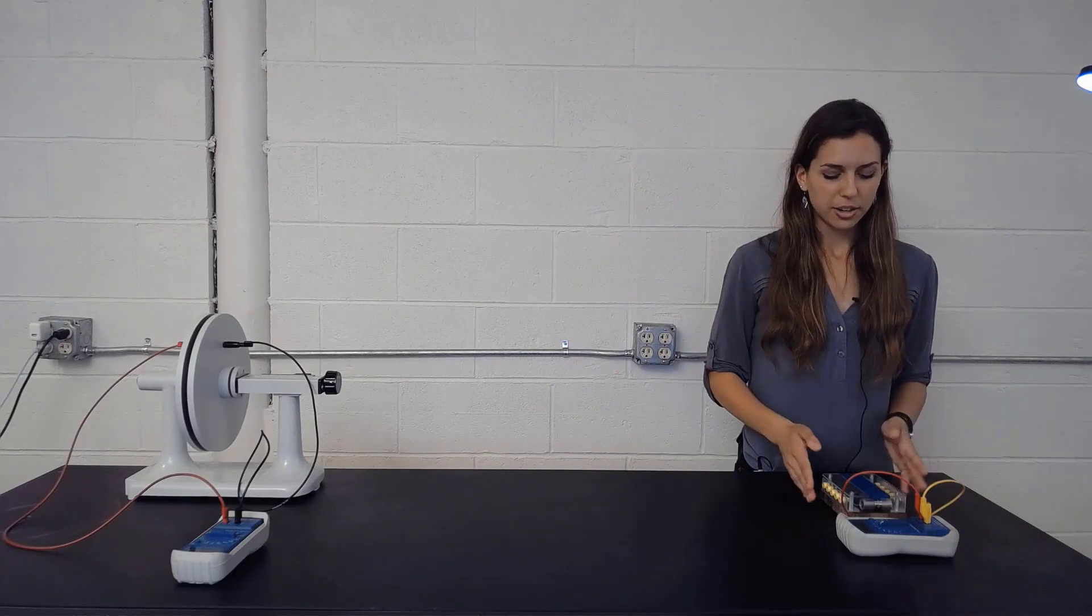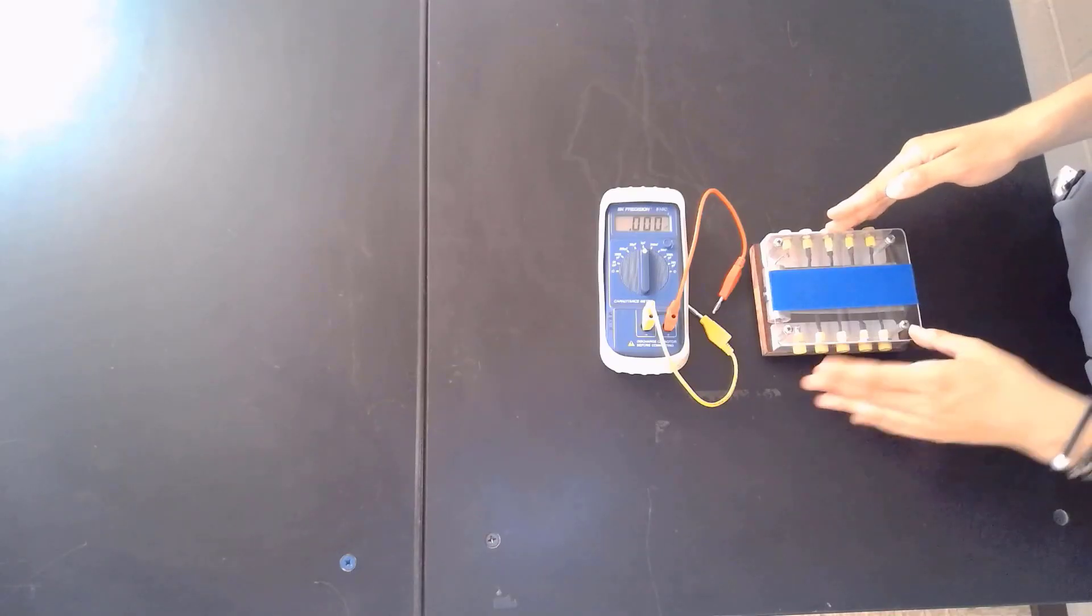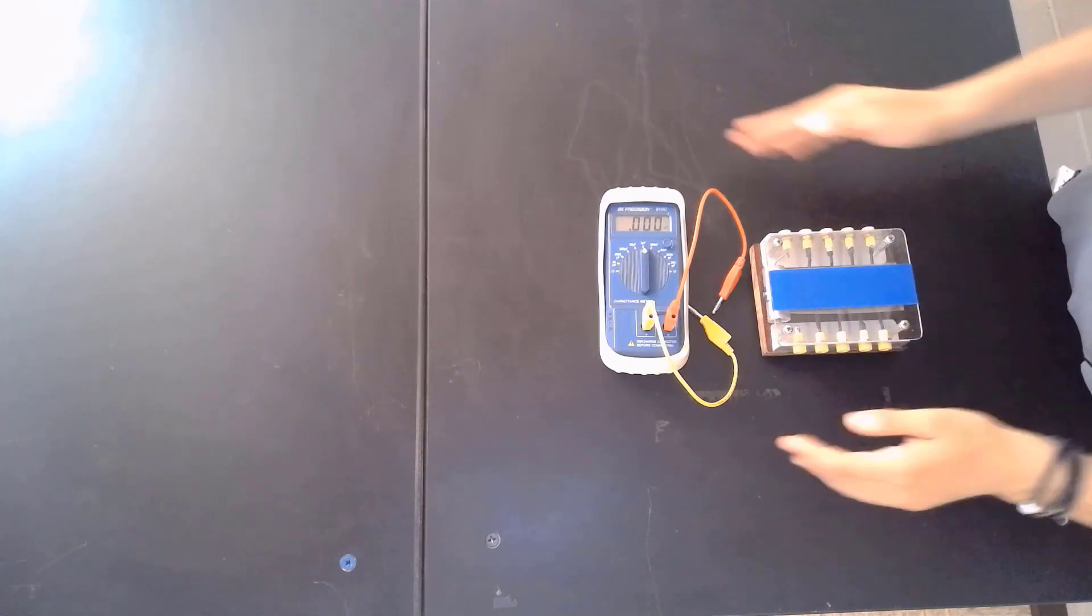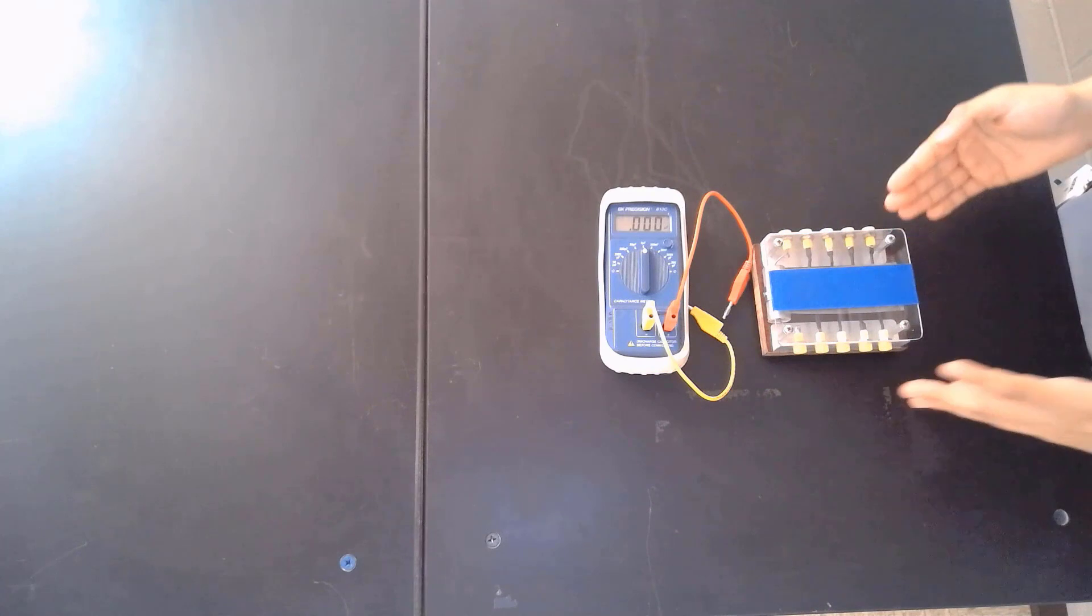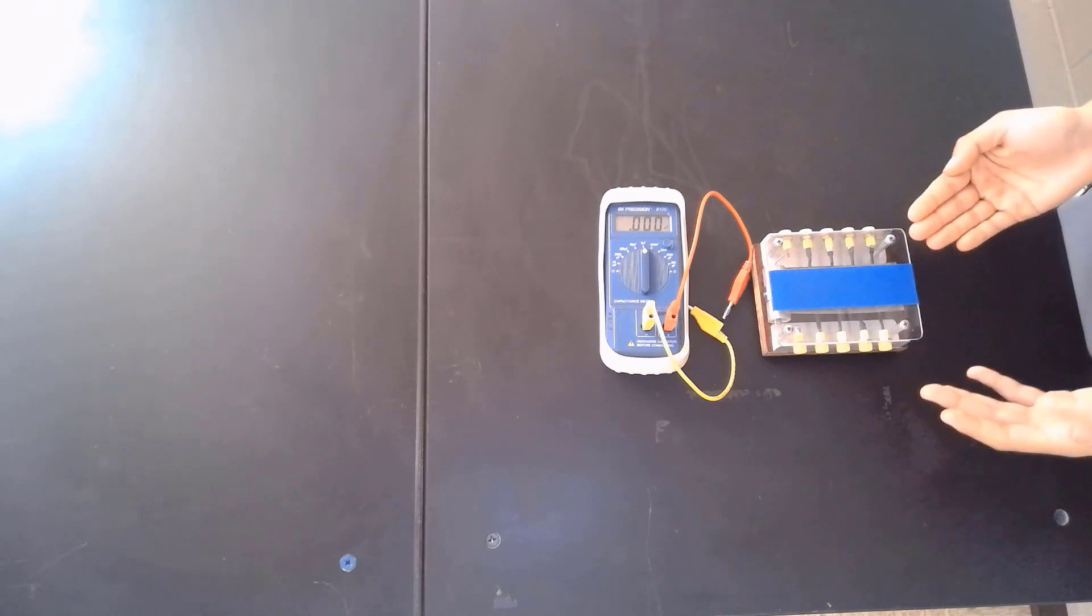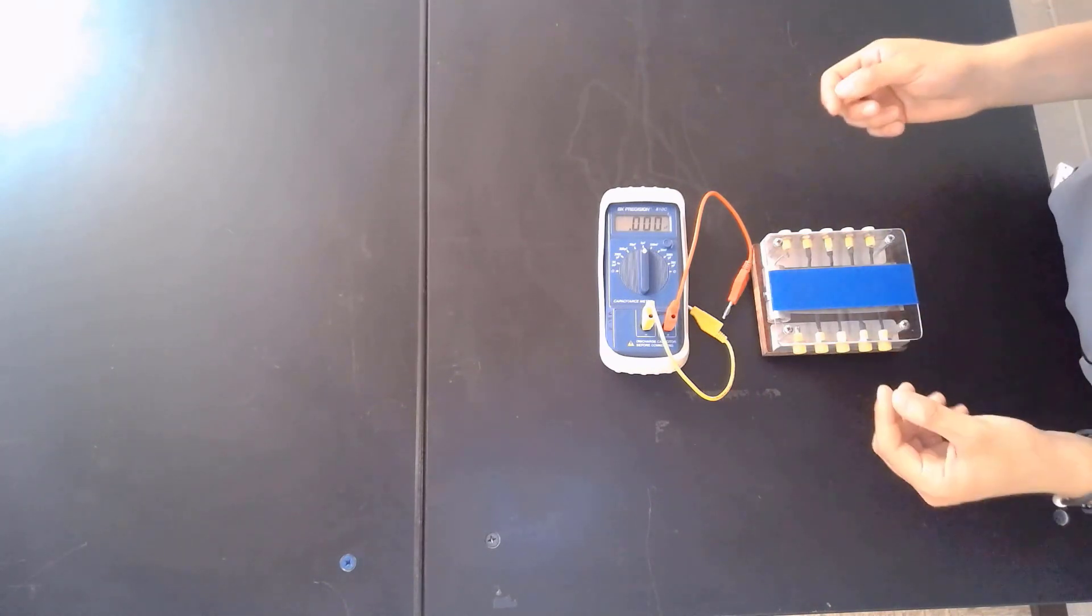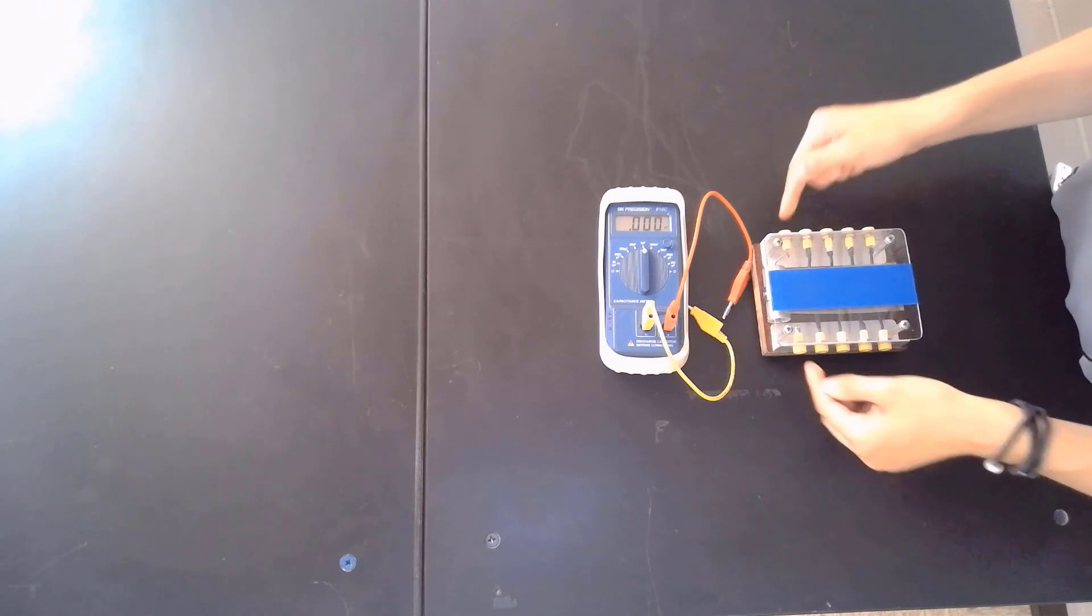Okay, so here we have a capacitance box that has five capacitors in it, and here we have a capacitance meter. To theoretically calculate the equivalent capacitance for a series or parallel circuit, we first need to know the capacitance of C1 and C2.